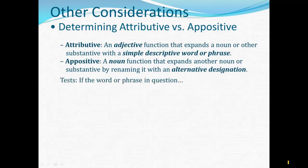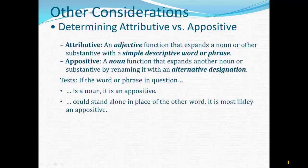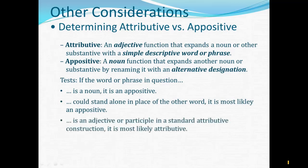There are some tests we can apply to determine whether something expanding a noun is attributive or appositional. If the word or phrase in question is a noun, then it's an appositive, because nouns do not function attributively in Greek — unlike English, where nouns can modify other nouns. If the word in question could stand alone in place of the other word, then it's most likely an appositive. If the word is an adjective or participle in a standard attributive construction — article–attributive–noun or article–noun–article–attributive — then most likely it is in fact attributive. If the word in question is a pronoun, it is most likely attributive.